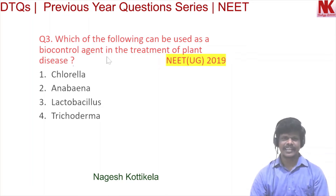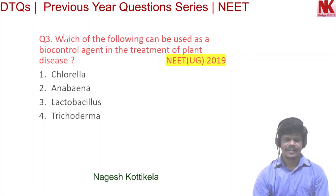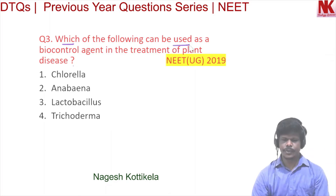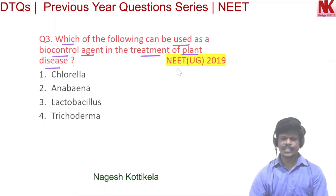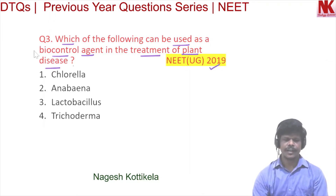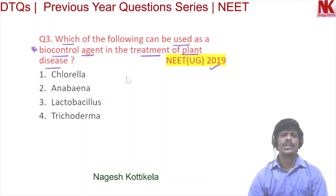Welcome back. The question: which of the following can be used as a biocontrol agent in the treatment of plant disease? This question was asked in NEET 2019. Biocontrol means the use of biological methods for controlling plant diseases and pests.